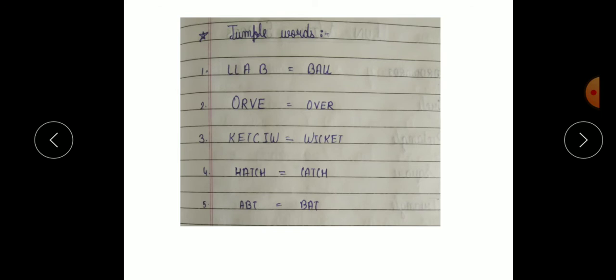Now next, jumbled word. Aap ko ye words correction karke phir se write karne hai. L-L-L-A-B, kya banhe ga us ka? B-A-L-L, ball. O-R-V-E, O-V-E-R, over. K-E-T C-I-W, W-I-C-K-E-T, wicket. H-A-T-C-H, C-A-T-C-H, catch. A-B-T, B-A-T, bat. So aap ko aise hi saare words CW notebook me one time and HW notebook me two time write karne hai.